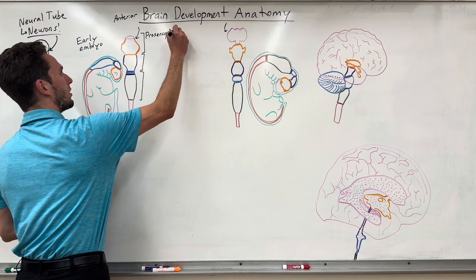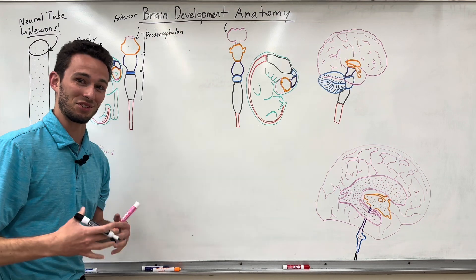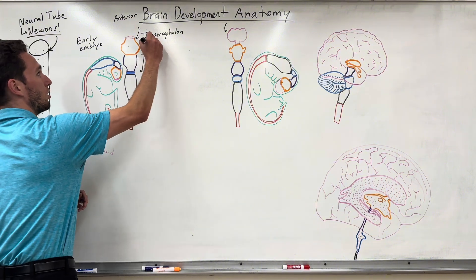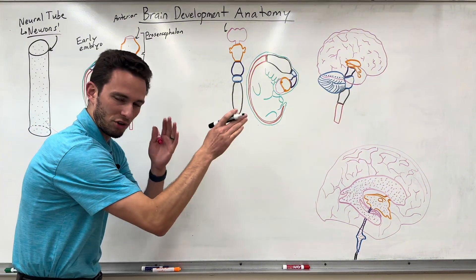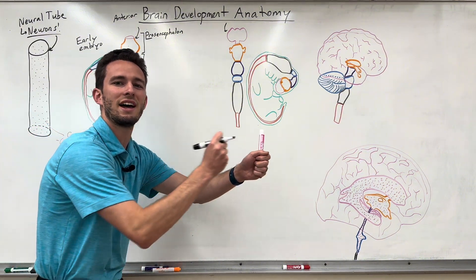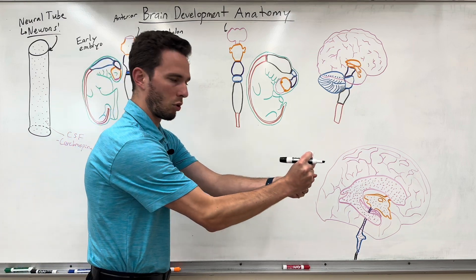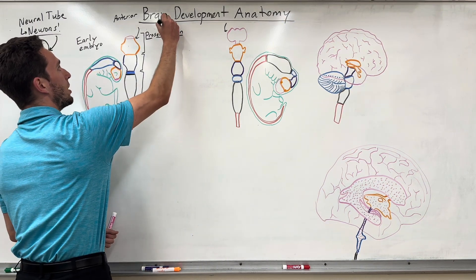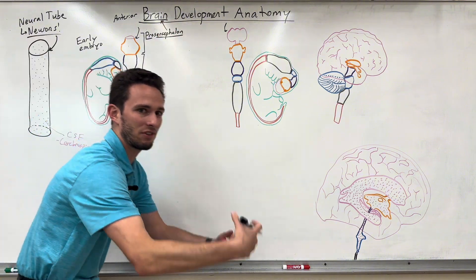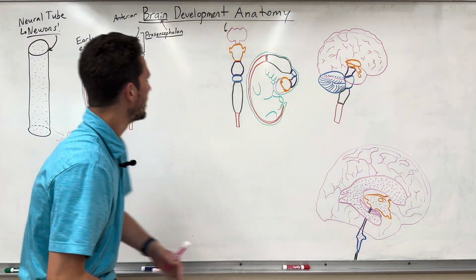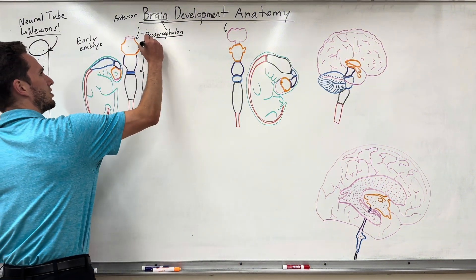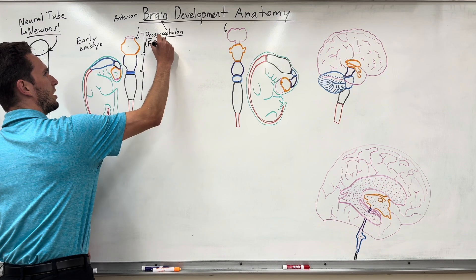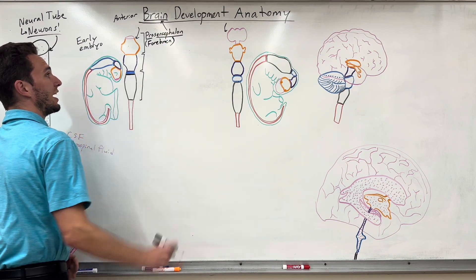There will be a lot of prefixes and suffixes in this video. 'Pro' always refers to forward — like the protagonist is somebody moving the plot forward. 'Encephalon' simply means brain, so anytime you hear encephalon, just know it means brain. You may also hear this called the forebrain, which is the same exact thing — 'fore' also means in front.